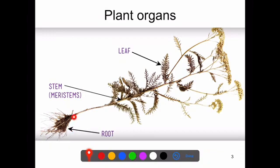Here we have a root with the stem, branches, leaves, flowers, and if there was fruit, fruit as well. Those are the organs of the plant.